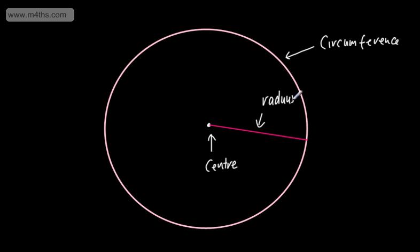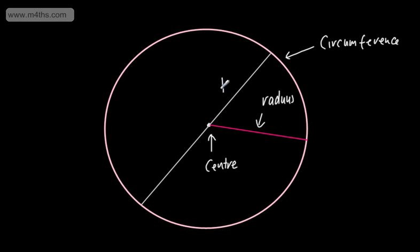The next one we're going to have is a diameter. A diameter will go through the centre of the circle, and it will meet the circumference either side. The diameter could look like that — so that's what we call a diameter.